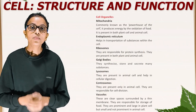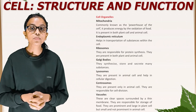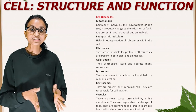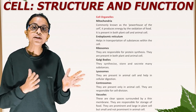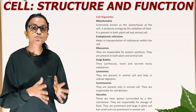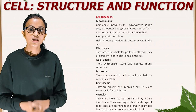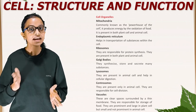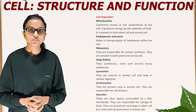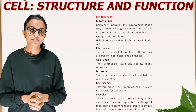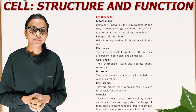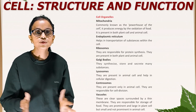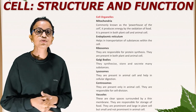Cell organelles. Mitochondria: commonly known as the powerhouse of the cell, it produces energy by the oxidation of food. It is present in both plant and animal cells. Endoplasmic reticulum: helps in transportation of substances within the cell. Ribosomes: they are responsible for protein synthesis and are present in both plant and animal cells. Golgi bodies: they synthesize, store, and secrete many substances. Lysosomes: they are present in animal cells and help in cellular digestion. Centrosomes: they are present only in animal cells and are responsible for cell division.